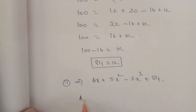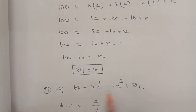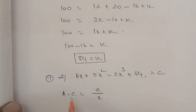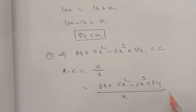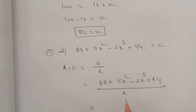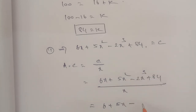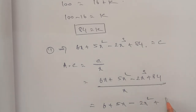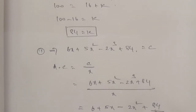The average cost function formula is: average cost equals C divided by x. So dividing the total cost function by x: average cost equals (6x plus 5x square minus 2x cube plus 84) divided by x. Simplifying each term by cancelling x: 6x/x gives 6, 5x square/x gives 5x, 2x cube/x gives 2x square, and 84/x remains. Therefore average cost equals 6 plus 5x minus 2x square plus 84 by x.